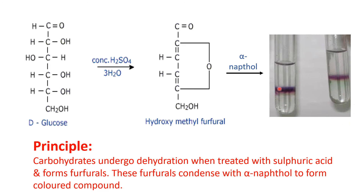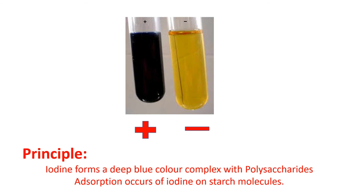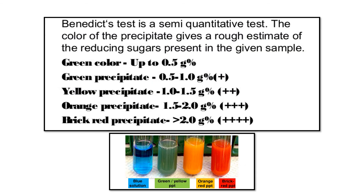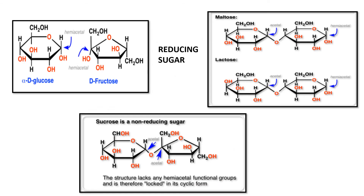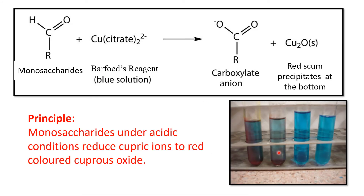Here we can see the different observations for Molisch test — violet-purple ring at the junction of two layers. Iodine test is negative for both lactose and maltose as they are disaccharides. Benedict's test is negative for sucrose and positive for lactose or maltose. Lactose and maltose are reducing sugars; sucrose is not a reducing sugar because its free aldehyde or ketone group is locked.